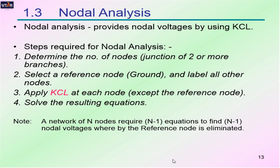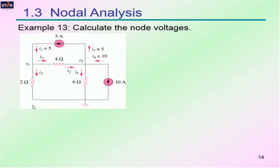The third method we are going to learn is nodal analysis. Nodal analysis is based on the number of nodes in the circuit — if you have two nodes, you should obtain two equations. The procedure is: first determine the number of nodes (junctions of two or more branches), then select a reference node or ground and label all others. Apply Kirchhoff's current law at each node except the reference node, then solve the resulting equations.